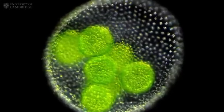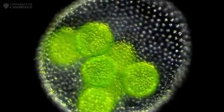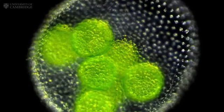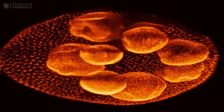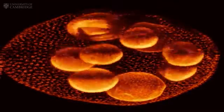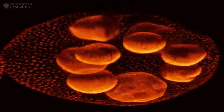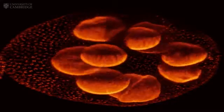Researchers have recently captured the first three-dimensional images of embryos of a green alga called Volvox turning itself inside out, which may help us understand how a remarkably similar process called gastrulation works in early animal development.